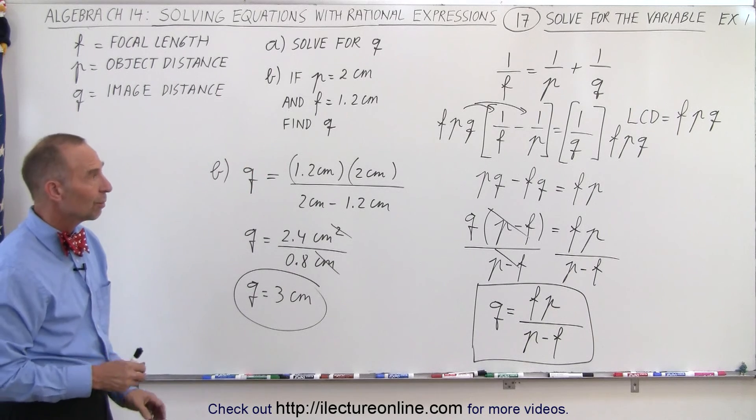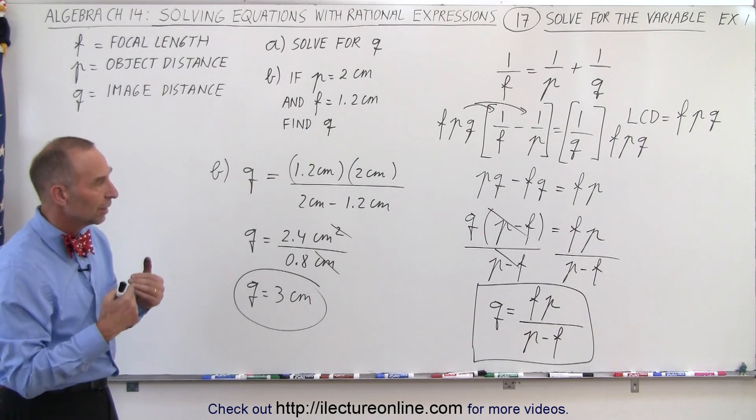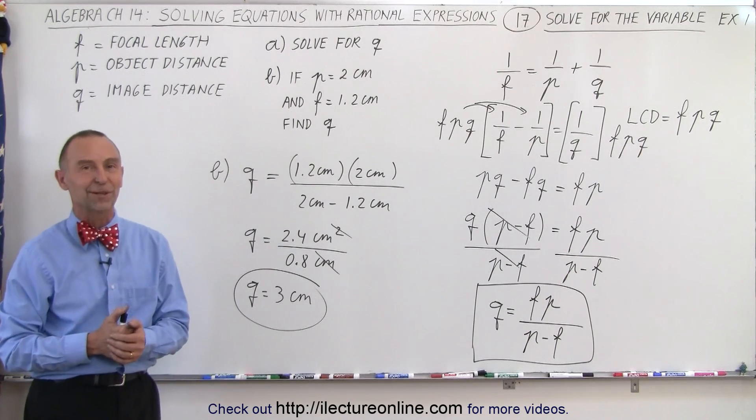So, first, again, use the same technique as before, multiply both sides of the equation by the lowest common denominator, then solve for the variable we're looking for, and plug in the values. And that is how it's done.